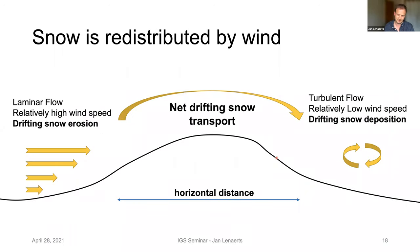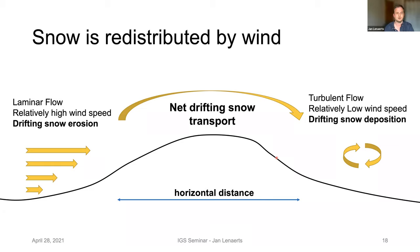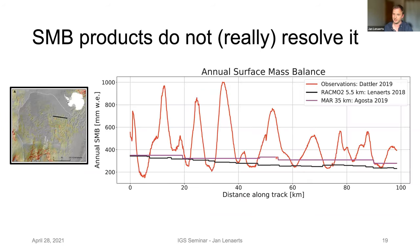Snow is redistributed by the wind according to the surface topography. On the windward side of a surface topography bump, we find relatively high wind speeds, so typically snow is eroded by the wind and then transported over the bump towards the leeward side, where it's deposited where wind speeds are relatively low. You get net mass transport from the windward side towards the leeward side, leading to substantial variations in surface mass balance according to topography.